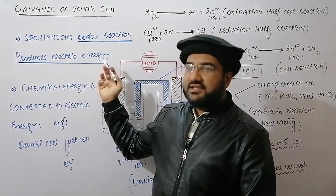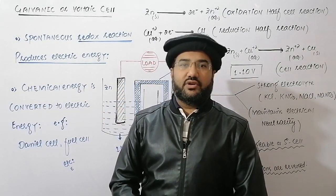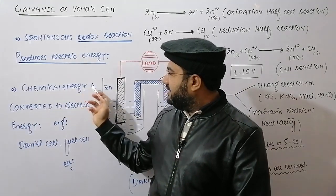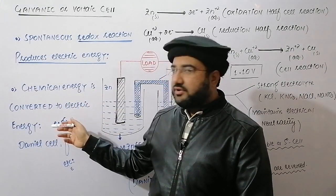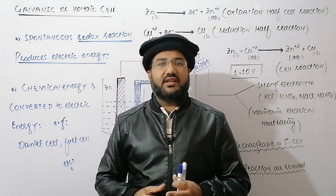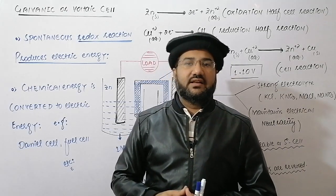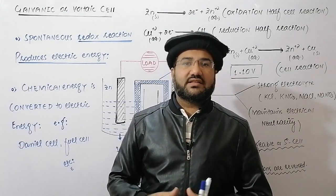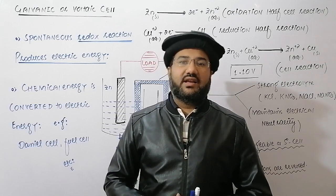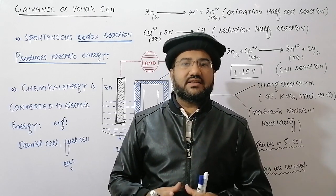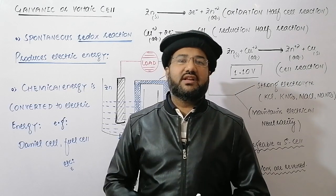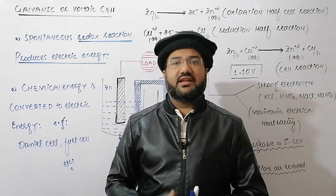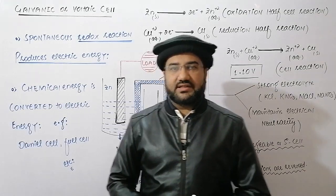In this cell, electric energy or electricity is produced. In other words, you can say that chemical energy is basically converted to electric energy. So in the galvanic or voltaic cell, the energy of a chemical reaction is consumed to produce electric energy. This is the conversion of one form of energy into another — that is, chemical energy into electric energy.